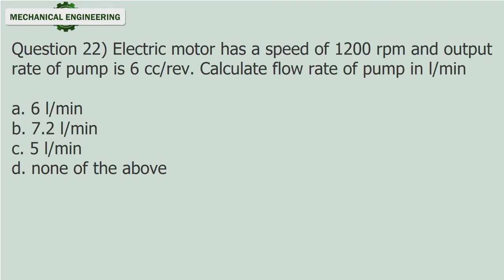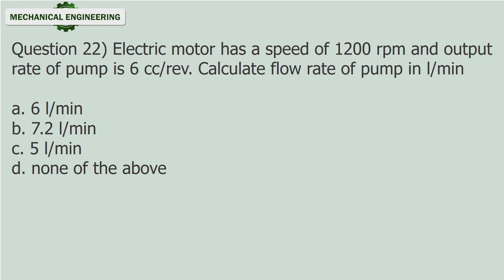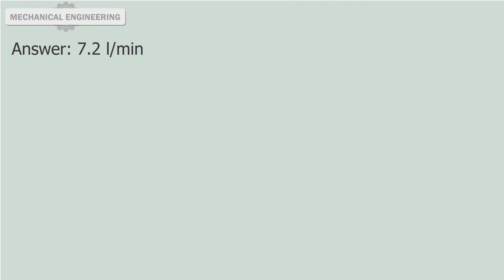Question 22: An electric motor has a speed of 1200 revolutions per minute and an output rate of pump of 6 cc/rev. Calculate the flow rate of the pump in liters per minute. A. 6 liters per minute. B. 7.2 liters per minute. C. 5 liters per minute. D. None of the above. Answer: 7.2 liters per minute.